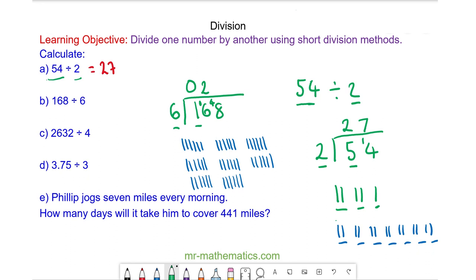And you can see we have 8 6s in 48. So 168 divided by 6 is 28.